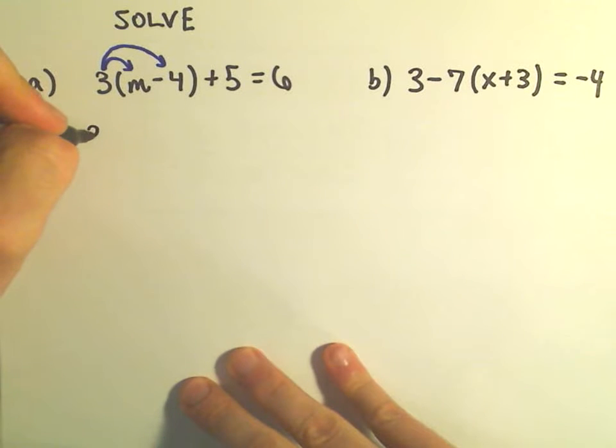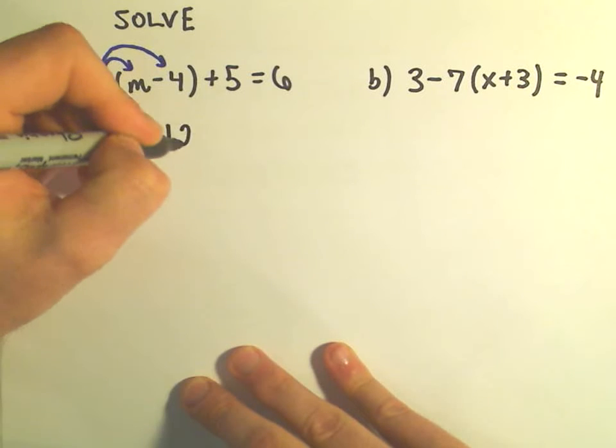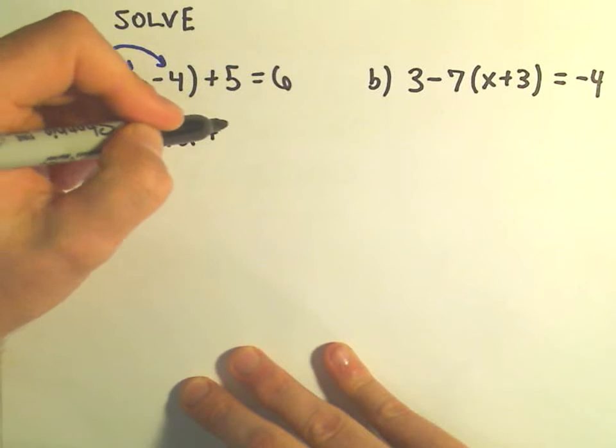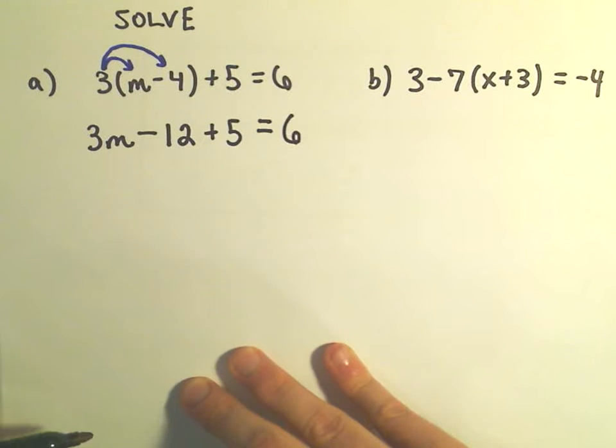So 3 times m is simply 3m, 3 times negative 4 is negative 12, the plus 5 will just drop down, I'm not doing anything with that, and then positive 6 also drops right down.